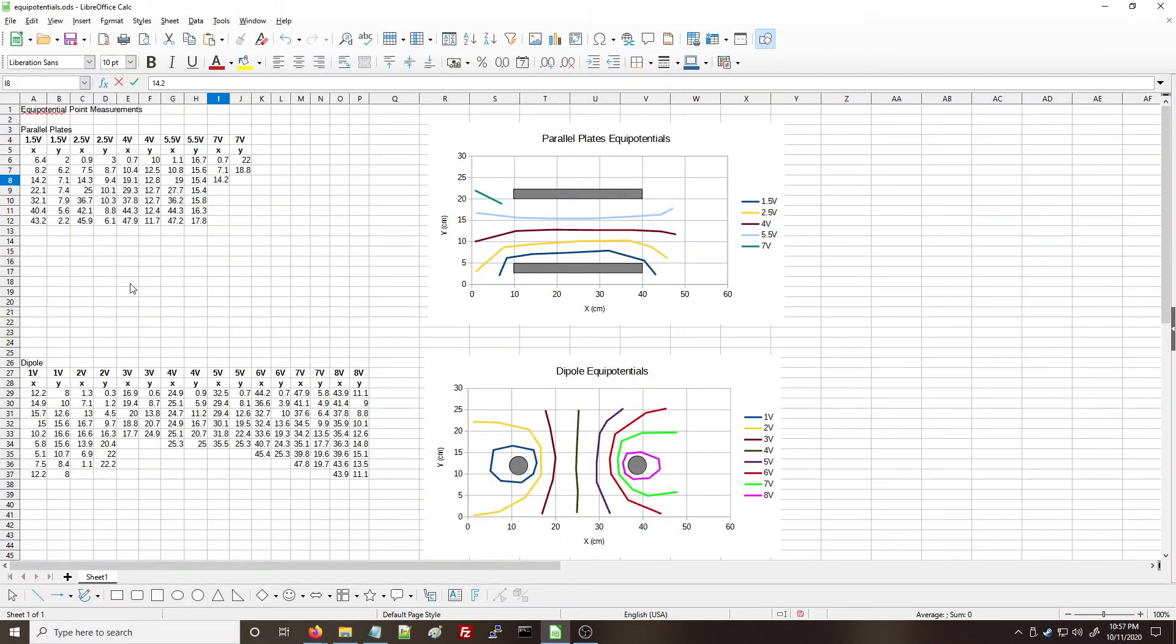You can draw your points and record the voltages on a piece of graph paper, or record them in a spreadsheet and use this to plot the equipotential lines.